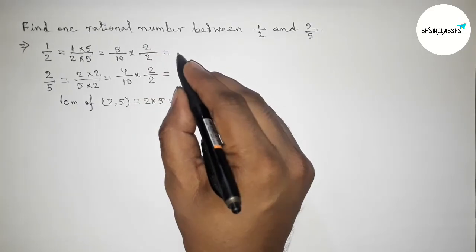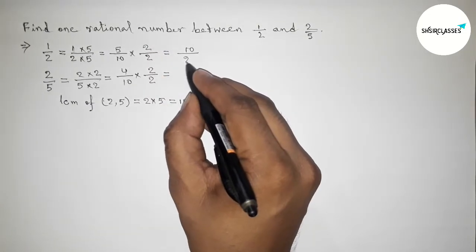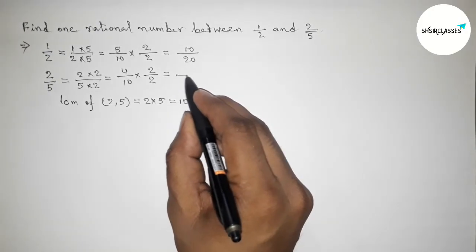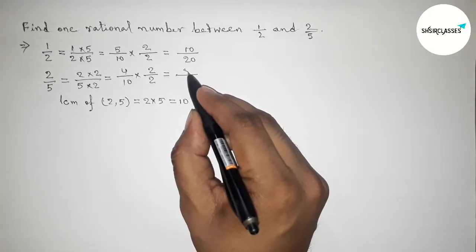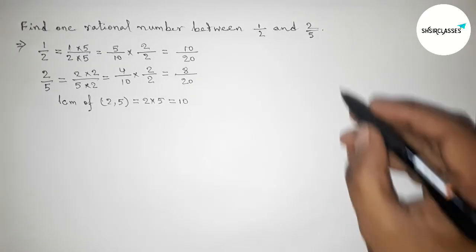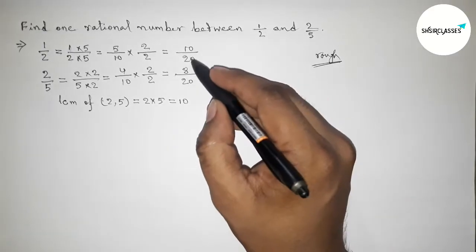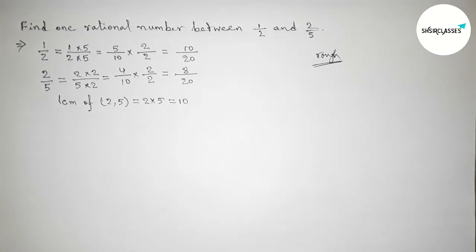So now calculating this: 5 times 2 is 10, and 10 times 2 is 20. And this is 4 times 2 is 8, and this is 20. So now both the denominators are 20 and equal.